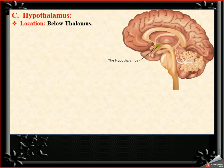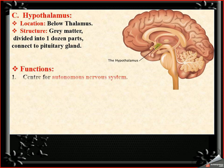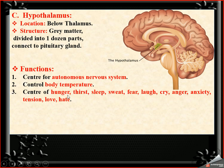The last part of the forebrain is the hypothalamus. 'Hypo' means below, so it is located below the thalamus. It is made by grey matter, divided into around one dozen parts, and connects to the pituitary gland — the smallest but most important gland, called the master gland. Functions of the hypothalamus include: center of the autonomic nervous system, controlling body temperature, hunger, thirst, sleep, sweat, fear, love, crying, anger, anxiety, tension, and hate.